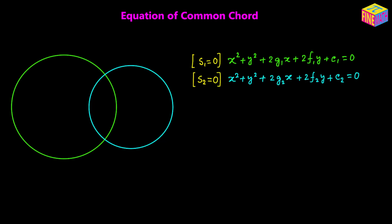Now let's see how the common chord looks. If we draw a straight line through the points of intersection, then that will be the common chord between the two circles. It will be a chord for the first circle as well as for the second circle. We call it a common chord because it is drawn through the points of intersection of the two circles. Let's suppose the top intersection point is A with coordinates x sub 1 comma y sub 1, and the bottom one is B with coordinates x sub 2 comma y sub 2.